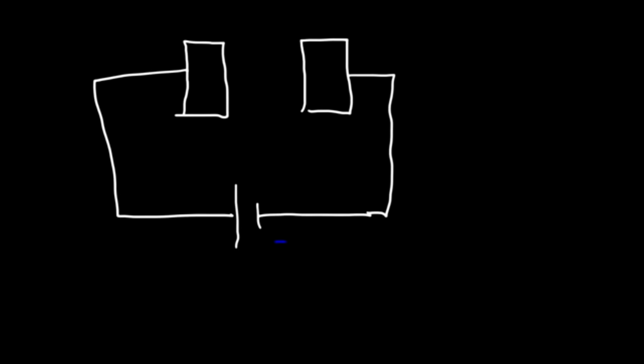Now, how does a capacitor work? How does a battery charge a capacitor? Let's draw the two metal plates of a capacitor connected to a battery. The long side of the battery is the positive terminal and the short side is the negative terminal. Before you connect the battery, if the capacitor is discharged it has a voltage of zero. Once you connect it to a 12-volt battery, there's a difference in potential, and whenever you have a difference in electric potential, current is going to flow.